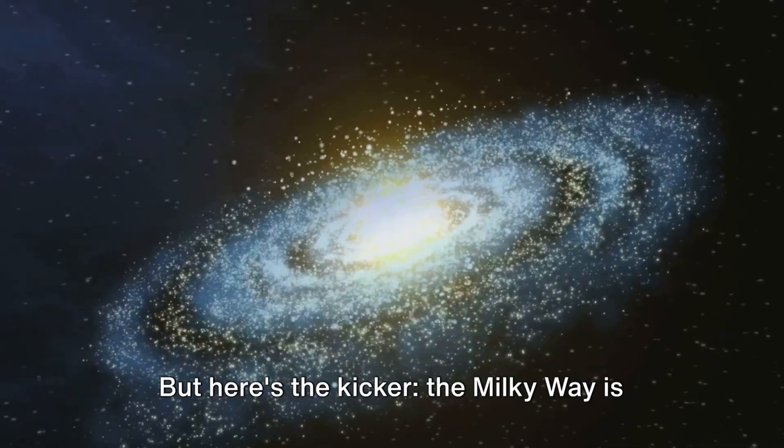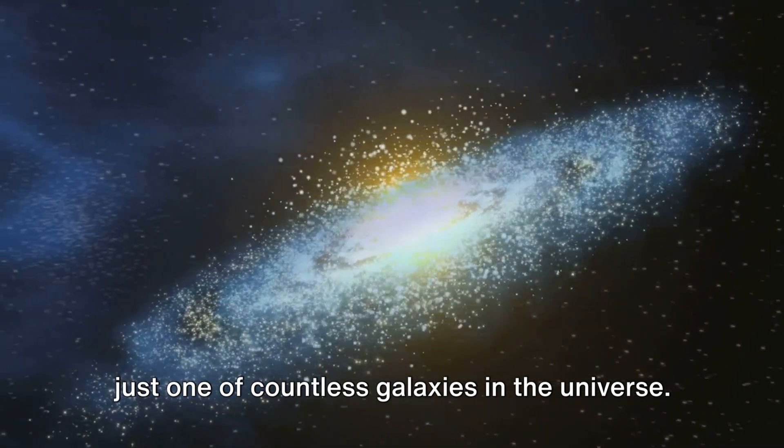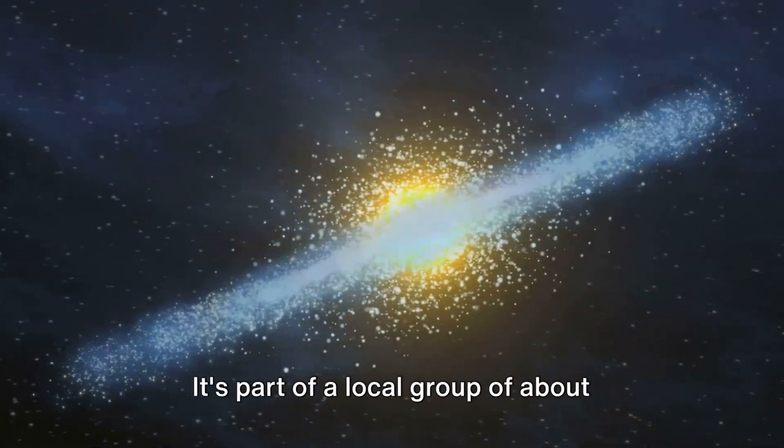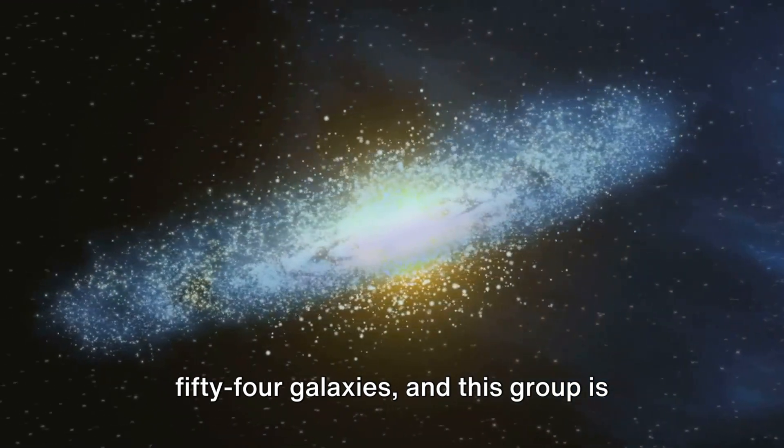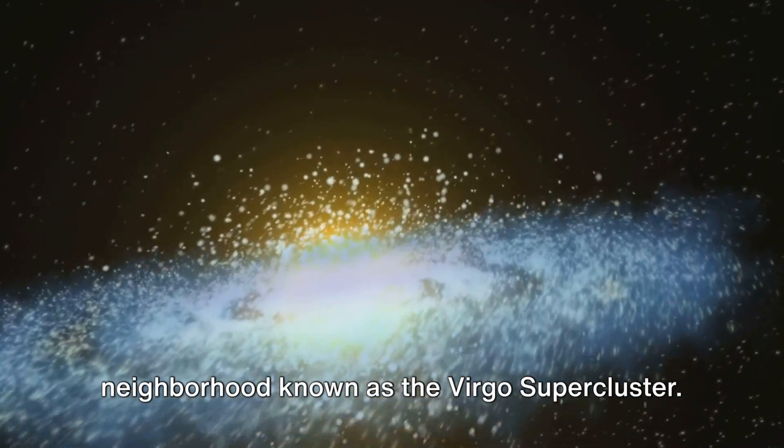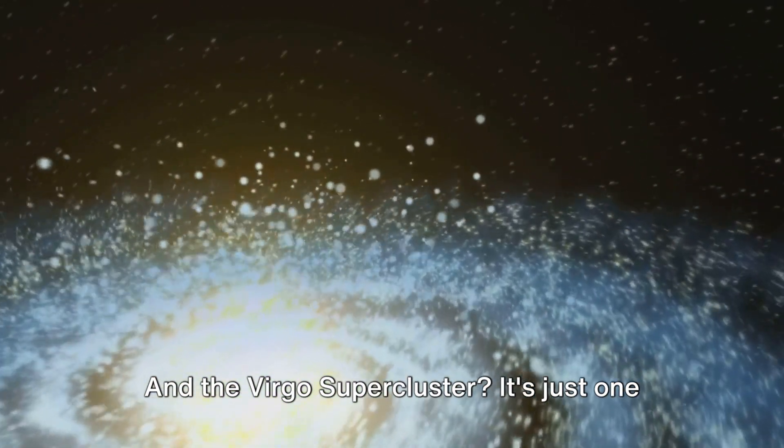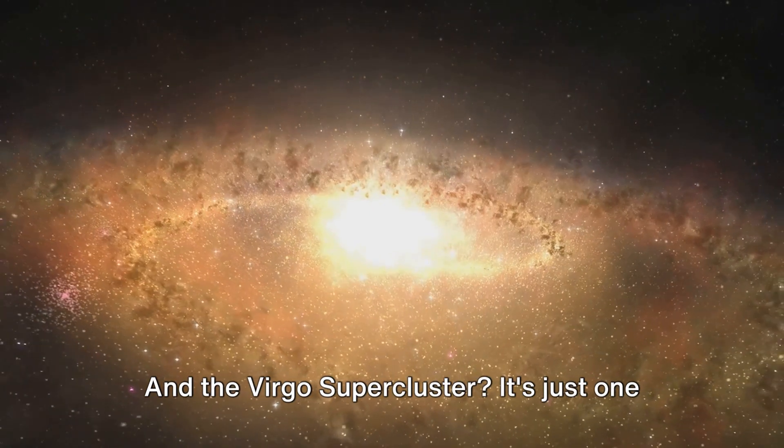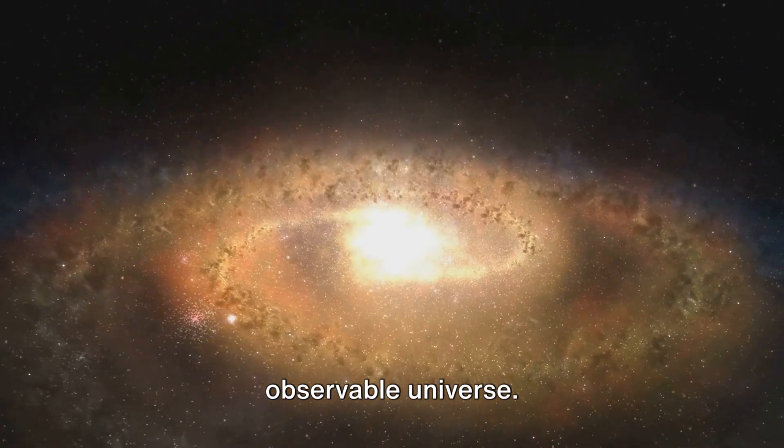But here's the kicker. The Milky Way is just one of countless galaxies in the universe. It's part of a local group of about 54 galaxies, and this group is just a tiny speck in a much larger cosmic neighborhood known as the Virgo Supercluster. And the Virgo Supercluster? It's just one of millions of superclusters in the observable universe.